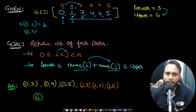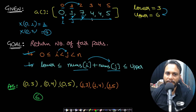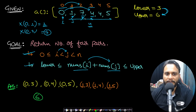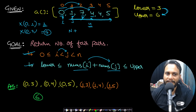If we increment j to index 2, the pair (0,2) gives sum 0+7=7, which is not in range [3,6], so also invalid. Incrementing j to the next element gives sum 0+4=4, which falls in the range [3,6], making it a valid pair. So for every ith index you iterate over all indices to the right — order of n checks for the first item, order of n-1 for the second, and so on.